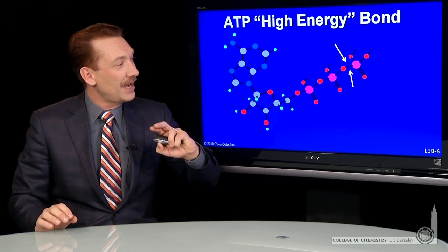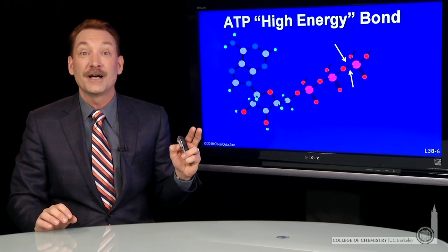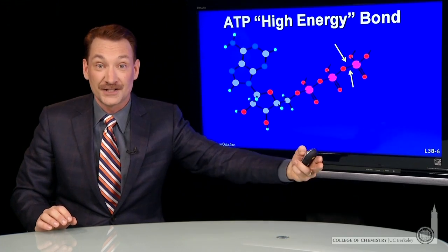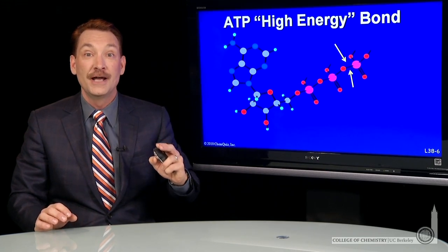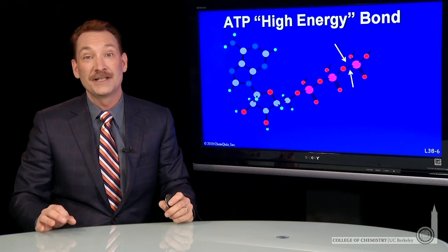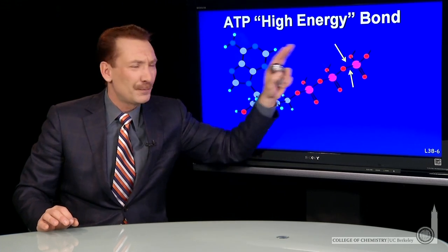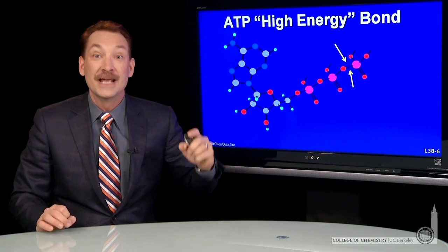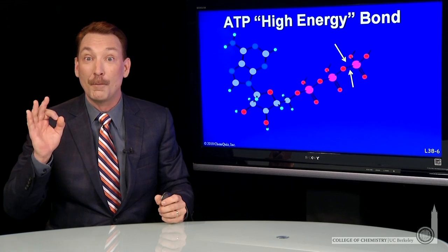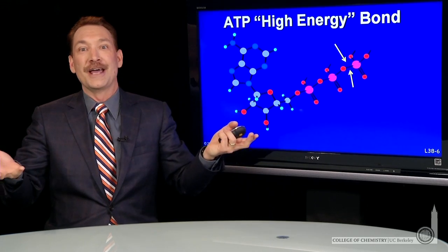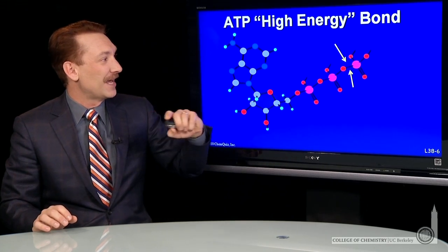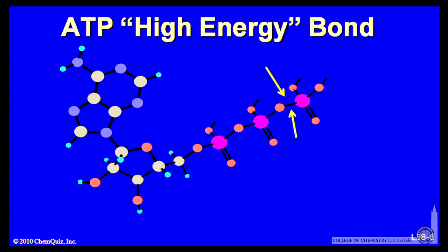So this is called a high energy phosphate bond because the overall hydrolysis reaction, the reaction of ATP with water, is downhill and does release energy. But it's not the breaking of this bond that releases energy. It's the forming of other, more stable, and in fact, higher energy bonds. So let's look at that. This is the high energy phosphate bond we're talking about. It's actually a rather weak bond because breaking it and forming other stronger bonds is what releases energy.